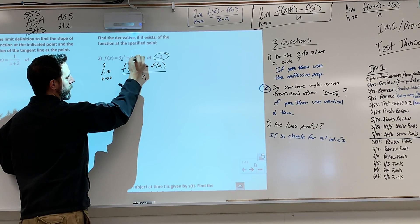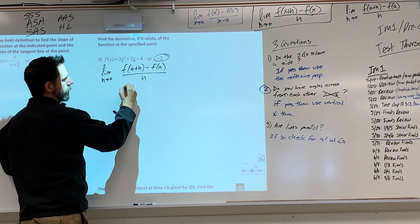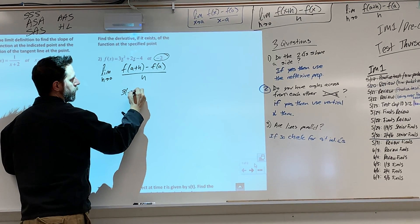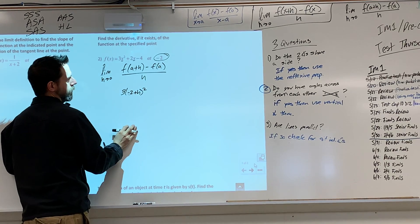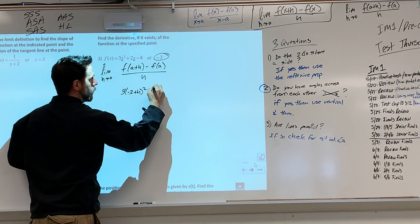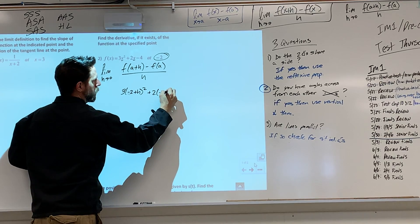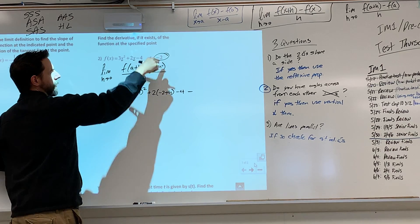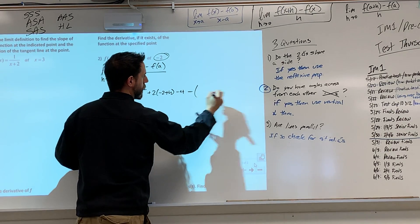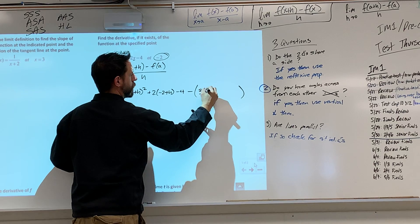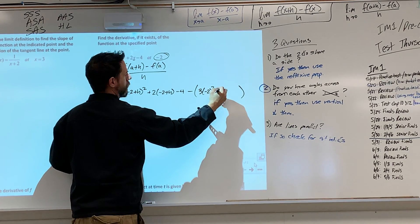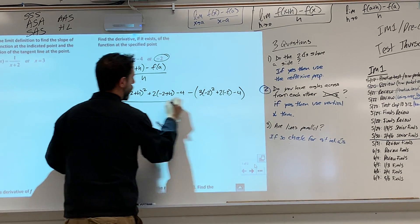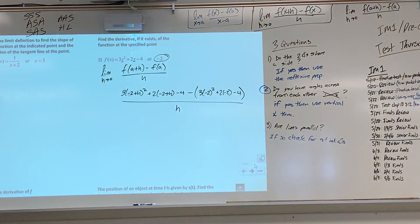So we're going to take this and plug it in here, same concept. So we're going to do 3 times A, and in this case it's not going to be A, it's going to be negative 2 plus h squared. And then we're going to do plus 2 times negative 2 plus h minus 4 minus f of negative 2. So that's going to be minus 3 times negative 2 squared plus 2 times negative 2 minus 4, all over h.